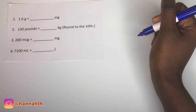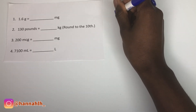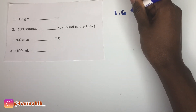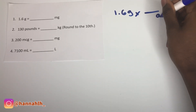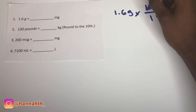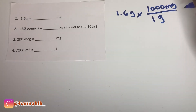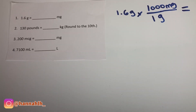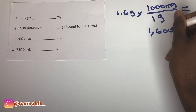The first question is asking to convert 1.6 grams to milligrams. So I'm going to write out 1.6 grams times — what's going on the bottom is going to be grams because we want to cancel out grams. We want our answer to be in milligrams. 1 gram is equal to 1000 milligrams. All you need to do is multiply 1.6 times 1000 milligrams, and you'll get your answer: 1600 milligrams.